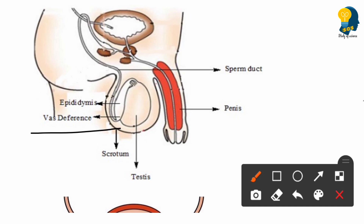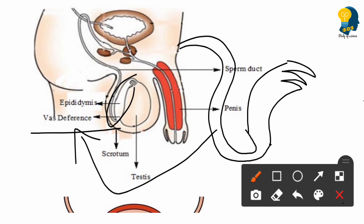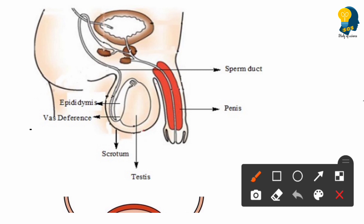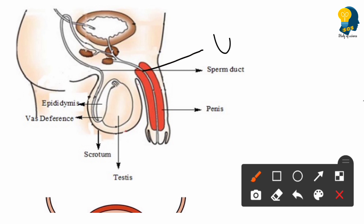The vas deferens is a tube-like structure emerging from the lower part of the epididymis. It opens into an ejaculatory duct — meaning it ejects or sends sperms outside. This ejaculatory duct carries the sperms through the urethra, which is a pipe-like structure present inside the penis.